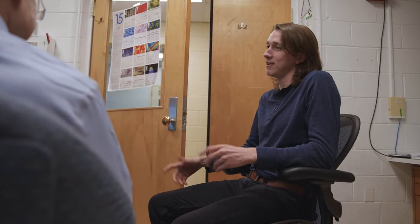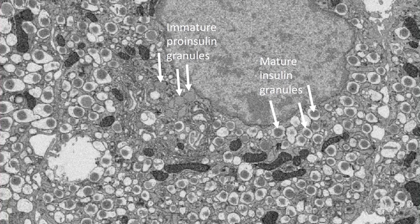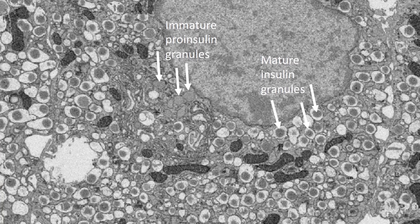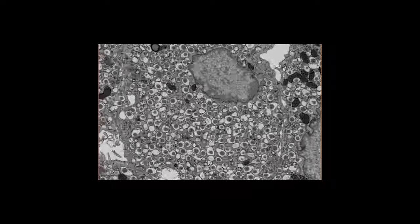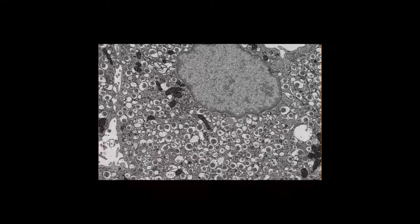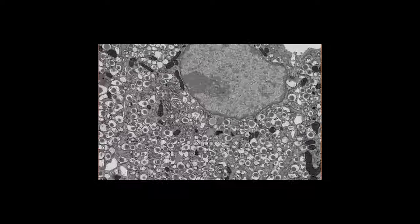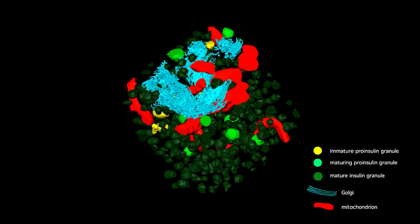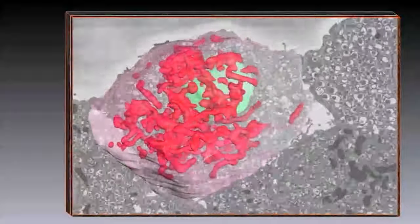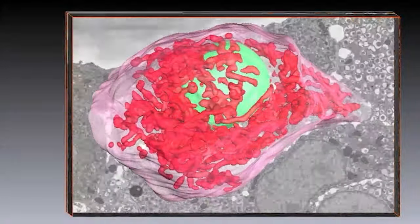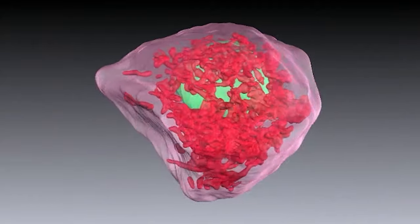In the case of the pancreatic islets of Langerhans, the beta cells — which are the most numerous cells in those micro organs — are the ones that produce insulin. We discovered that we could see very clearly the immature secretory granules of proinsulin and quantify the amount of proinsulin granules in these cells. The technique links function to structure in a way that hadn't been done before, because we were looking at entire cells rather than just random cuts through these insulin-containing cells.